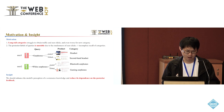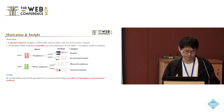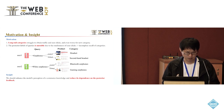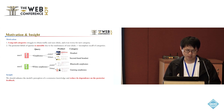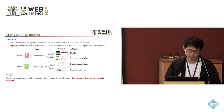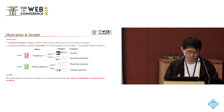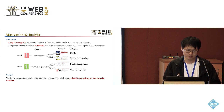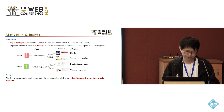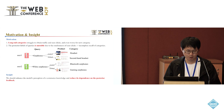For example, when a user searches for earphones, he clicks labels such as headset and second headset. Another user inputs a similar query such as white earphones, and the clicked labels may change to Bluetooth earphones or gaming earphones. Even though the categories of headset and second headset also offer white earphones, they are not clicked by customers and thus not presented as the label set. This instability makes the model very sensitive to the input, leading to an incomplete recall of categories.